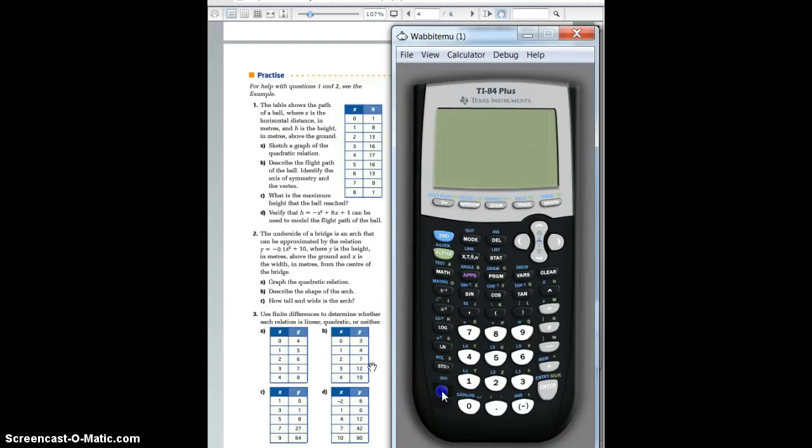So as always we start with turning it on. And just to input your information we're going to go to STAT and then we're going to go to EDIT and then here you can input your information. Now we're going to look at this question, question number 1 right here on the left hand side. The table shows a path of a ball where x is the horizontal distance in meters and h is the height in meters above the ground. So here you see that there is an xy table with values so we're going to input those values in. So we're going to treat L1 with our x values and L2 as our h values or y values if you will.